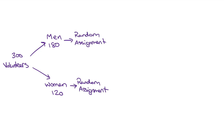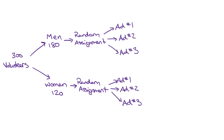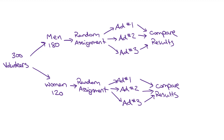Then we'll randomly assign — this is the step where you describe how you're going to label and select who goes into which group. We're randomly assigning our subjects to three different advertisements: Advertisement 1, Advertisement 2, Advertisement 3, and so on for the female volunteers as well. Next, we're going to compare the results within each gender — we can see if one advertisement is more effective on the women and maybe another is more effective on the men. But at the end, we pool all of our results together and compare the overall results.